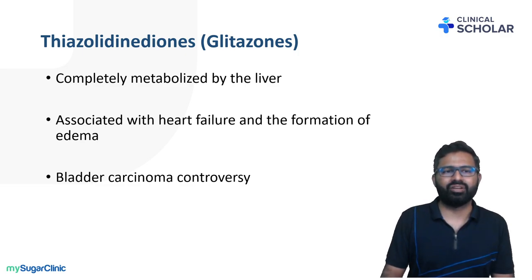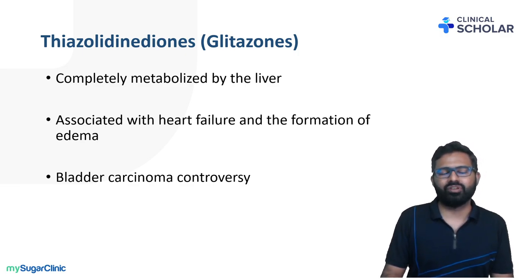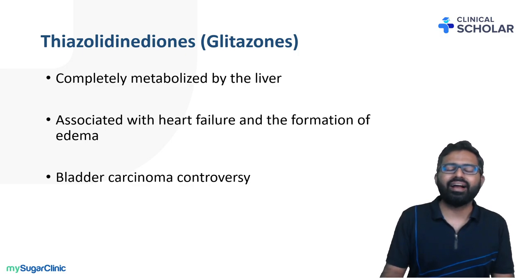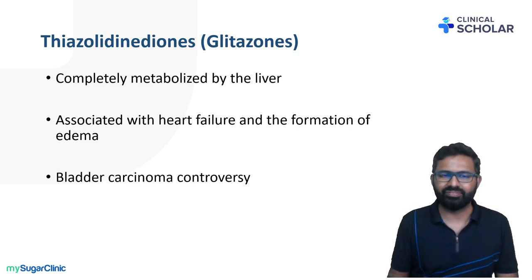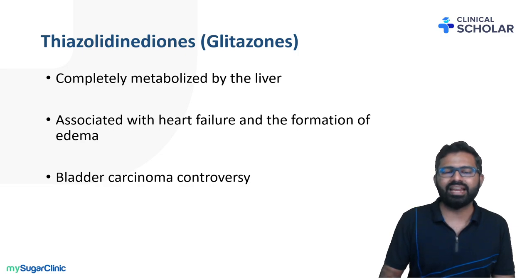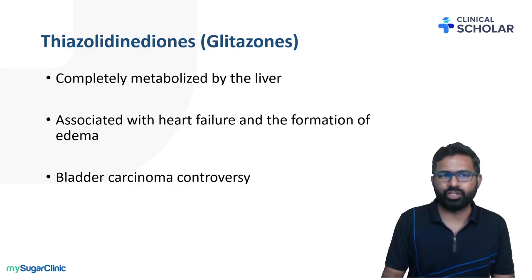The next group of drugs is the thiazolidinediones, the commonly available one being pioglitazone. It is metabolized by the liver and not excreted through the kidney, but the concern regarding the use of pioglitazone is that it is associated with heart failure and edema formation. Patients with chronic kidney disease are already at high risk of developing edema, and because of the cardiorenal syndrome, CKD patients are also prone to develop heart failure. Because of these two reasons — edema formation and associated heart failure risk — it is better to avoid pioglitazone or any thiazolidinediones. There is also a bladder carcinoma controversy associated with thiazolidinediones.